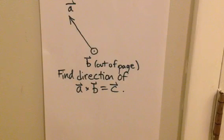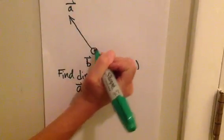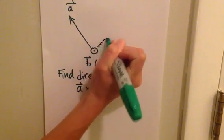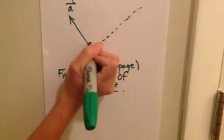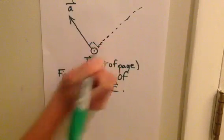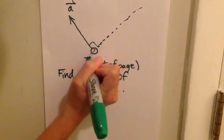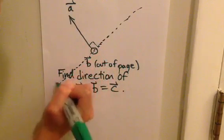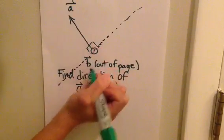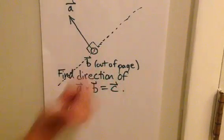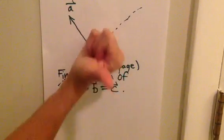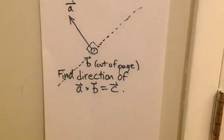What that means logically is that C can only lie in one of two directions. It could either point off this way in the plane of the page, because that would be perpendicular to A. Or it could go off this way in the plane of the page, because that would also be perpendicular to A. Both of them will be perpendicular to B, because B is out of the page.